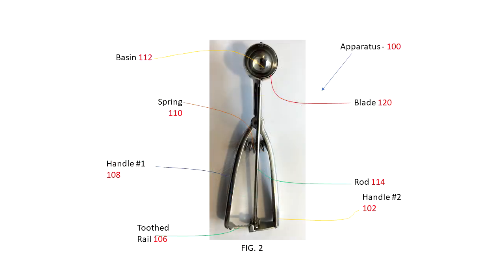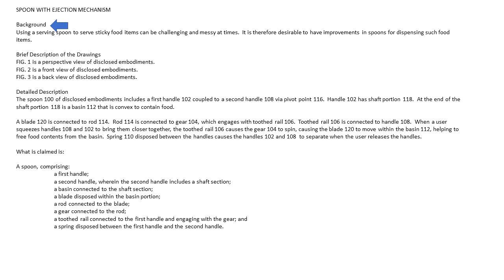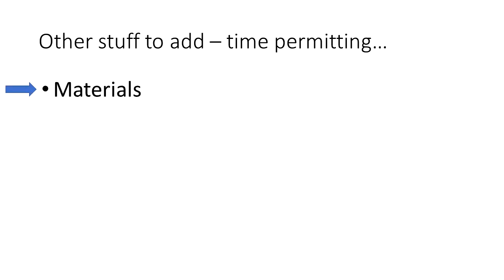So let's go over our application. We have the background, we have a listing of the drawings, we have a detailed description section and at least one claim. Of course if we have time we can add more stuff such as listing possible materials: metals, aluminum, steel, copper, plastics, polymers and so forth for making our spoon.